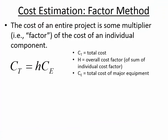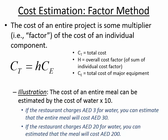Now let's talk about the factor method. The factor method is a way of putting together a simplified cost estimate where the overall cost of something can be predicted by the cost of just one of its components. Here's an illustration: if you went to a restaurant and I told you the cost of a meal can be estimated by multiplying the price of water by ten — if a cafeteria charges three dirhams for a bottle of water, you could roughly estimate the meal will cost 30 dirhams.